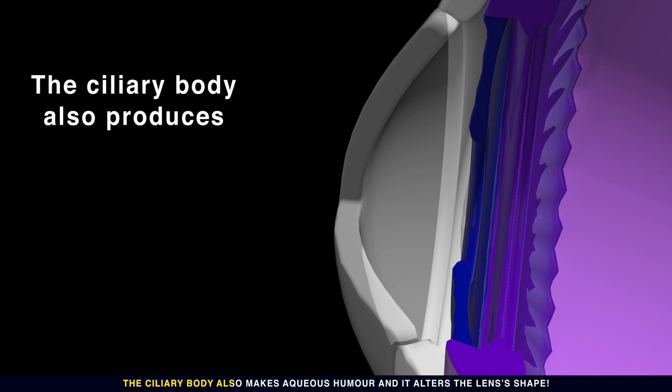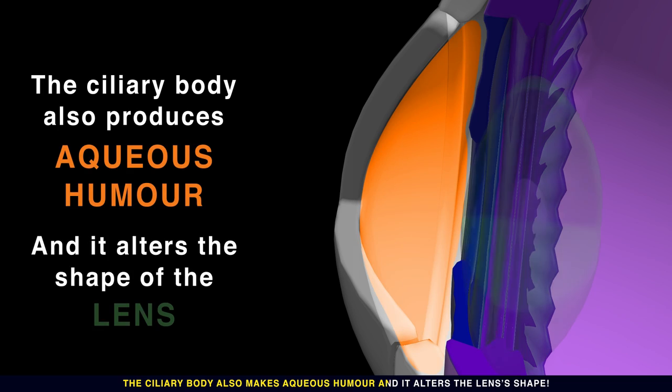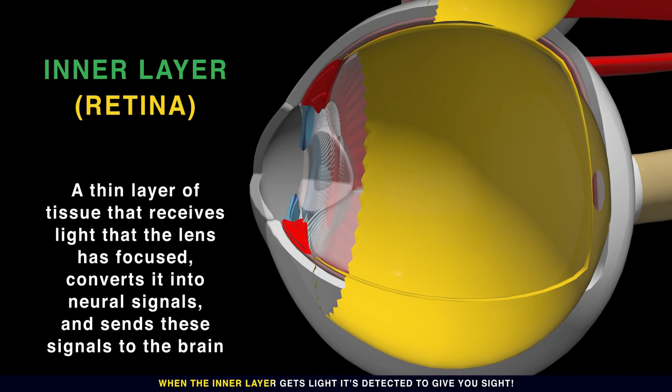The ciliary body also makes aqueous humor and alters the lens's shape. When the inner layer gets light, it's detected to give you sight.